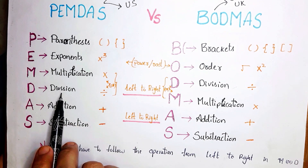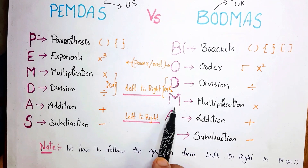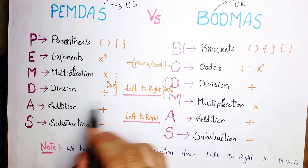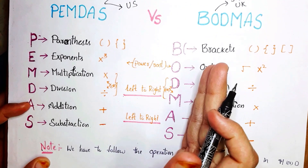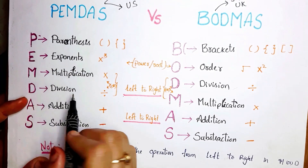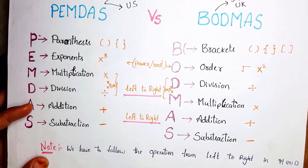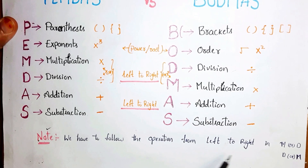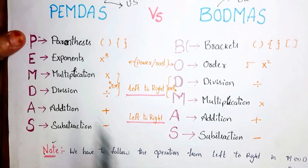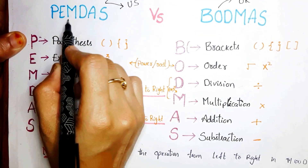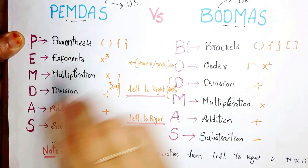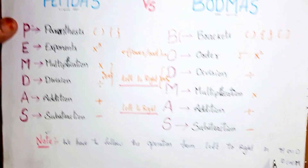The main difference between PEMDAS and BODMAS is: in PEMDAS, Multiplication comes first then Division, whereas in BODMAS, Division comes first then Multiplication. However, please note: whether multiplication or division comes first, we always have to follow the operations from left to right. That's why I'm focusing on this — in PEMDAS and BODMAS, the only difference is the interchanging positions of multiplication and division. All the rest are the same.